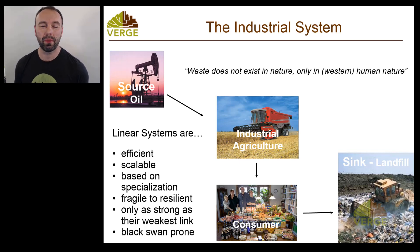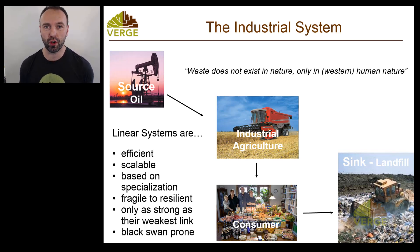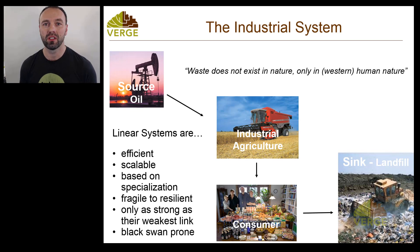Today's permaculture concept is all about comparing the system that we exist within right now — the industrial system, which is how humanity is currently set up — versus how nature functions. Understanding how these two systems differ gives us clues and insights into how we can actually change the way that humans currently live so that we can have a much more positive existence on the planet.